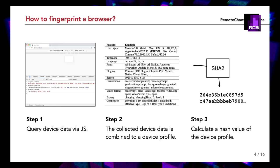Similar methods have been shown for the HTML canvas element and the Web Audio API. In the next step, all collected device data is combined into a comprehensive device profile. At best, this profile is unique and reproducible. In the last step, the device profile is used to calculate a hash value that represents the fingerprint, mostly for quick and easy comparison.